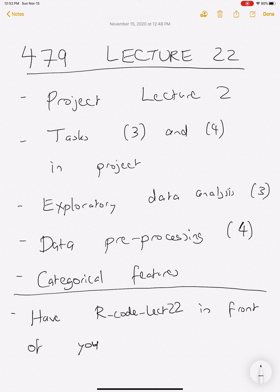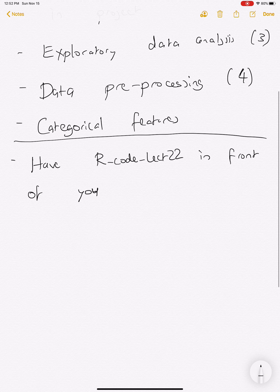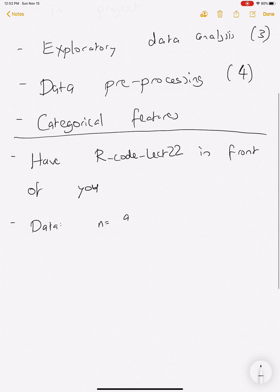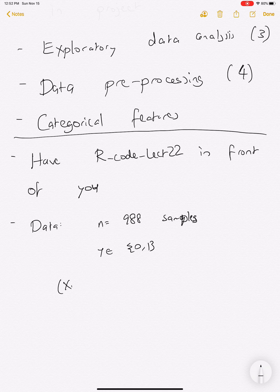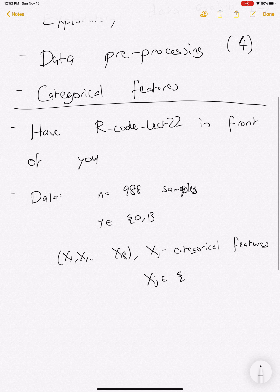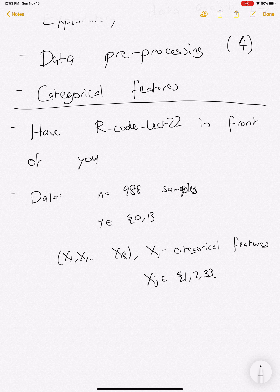Some natural questions to think about: what do we know about the data so far? The data we have is n equals 988 samples. Just by looking at the text file, we know that y is in {0, 1}, and then we have x1, x2 up to x8, where xj are categorical features with xj in {1, 2, 3}. These 1, 2, and 3 do not represent numerical values — they just represent which parent that is, so it's a categorical variable.